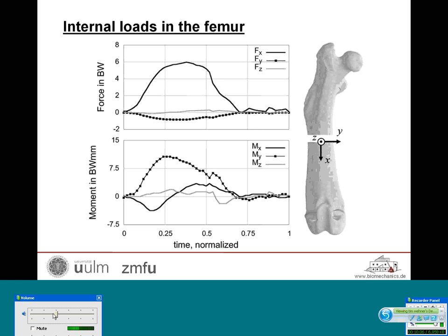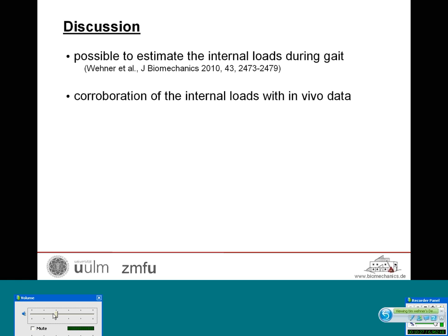Coming to the results for the desired internal loads in the femur: at the top, the three internal forces are shown, and at the bottom, the three internal moments. The force was highly dominated by the axial direction, with a maximum of up to six times body weight in axial compressive force. The highest bending moment was in the sagittal plane, with 11 body weight times millimeter.